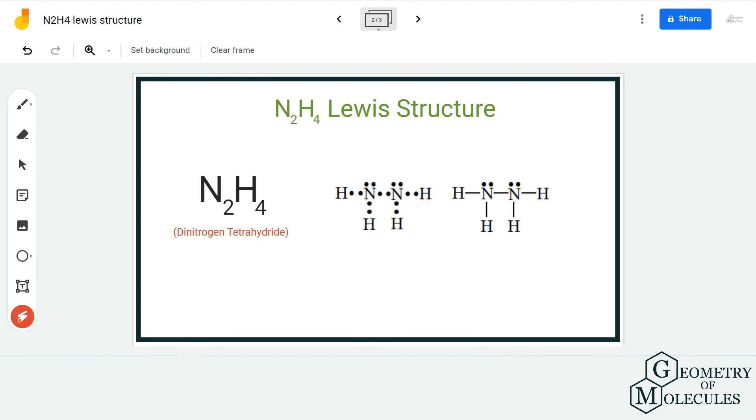So this is the Lewis structure of N2H4, in which each nitrogen atom forms bonds with two hydrogen atoms.